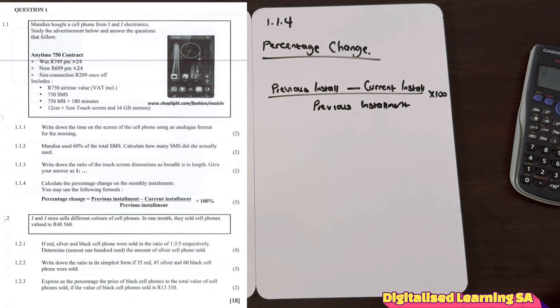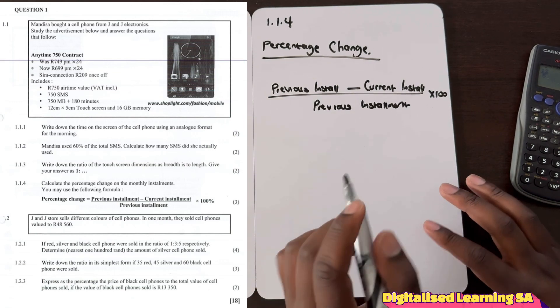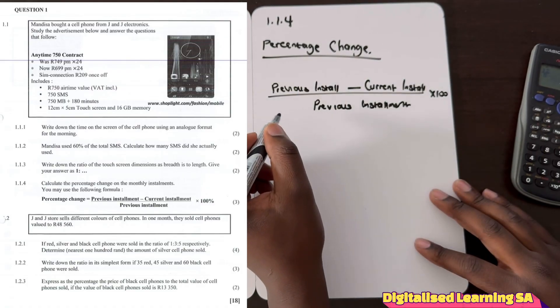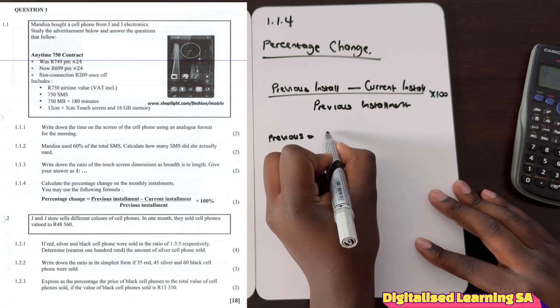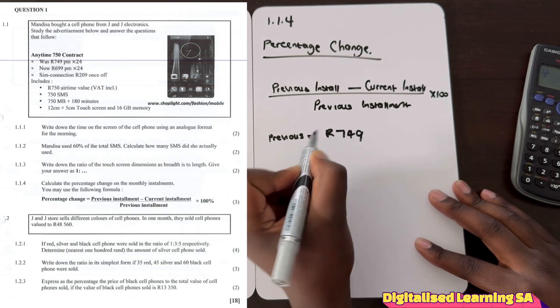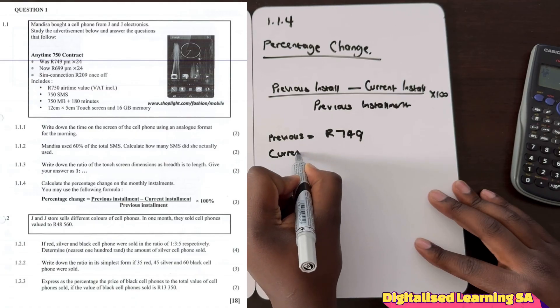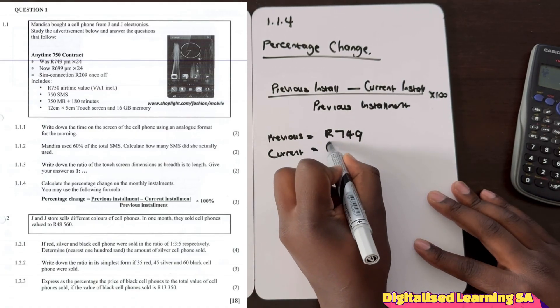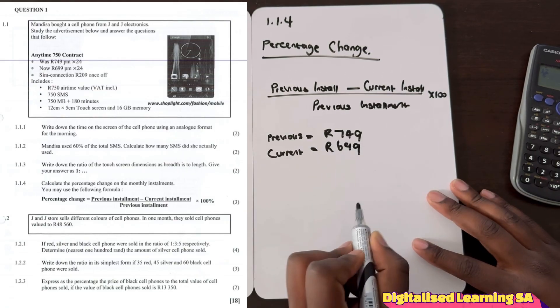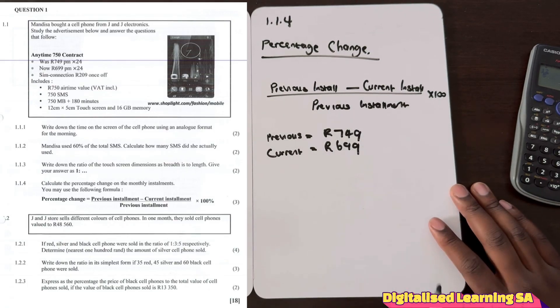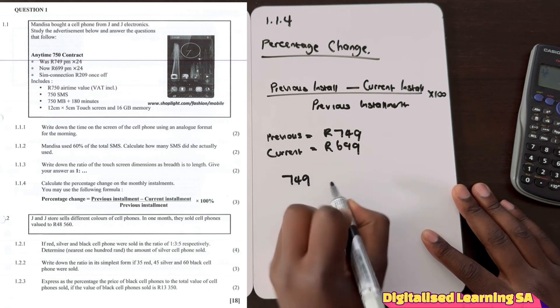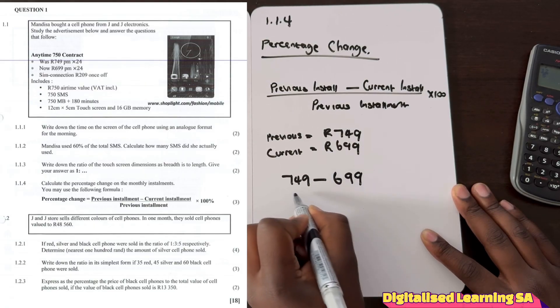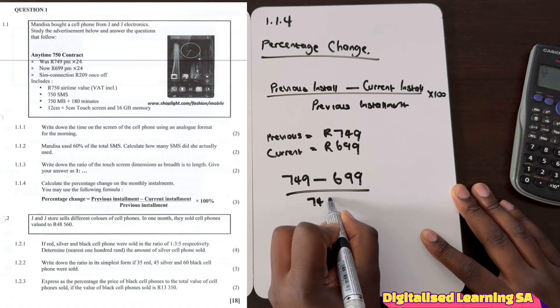So if we go back to our scenario we will see that the initial monthly installment was 749 and the current monthly installment is 699. So we need to take these values and plug them on our formula. So we will come and see previous which is 749 minus our current which is 699, divide by our previous.